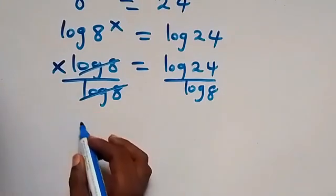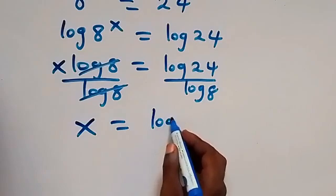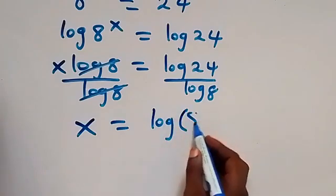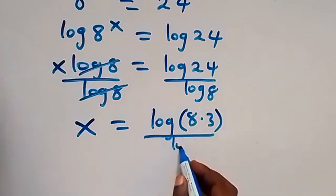What we have left is simply x, which equals log 24. We can separate that as log 8 times 3 over log 8.